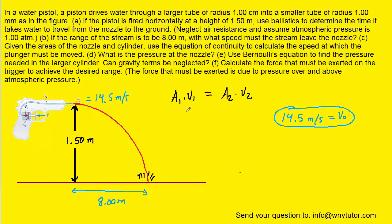The equation of continuity tells us that the product of area and velocity at one point equals the product of area and velocity at another point. We're solving for V1, the plunger speed, so we divide both sides by A1. We assume the cross-sectional areas of both the plunger and nozzle are circular, so we use the area of a circle for both A2 and A1.